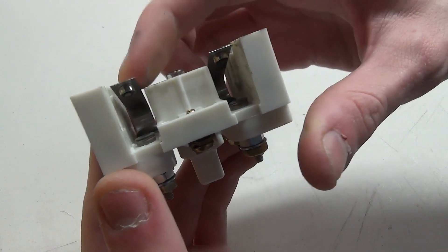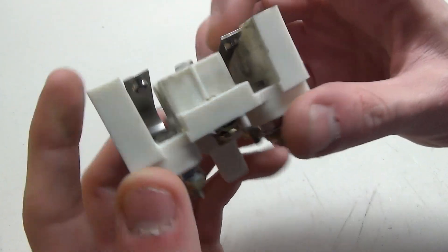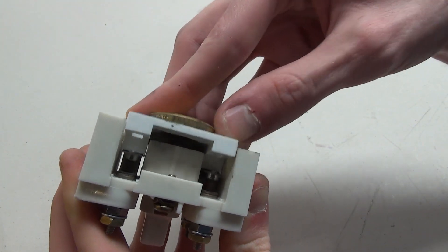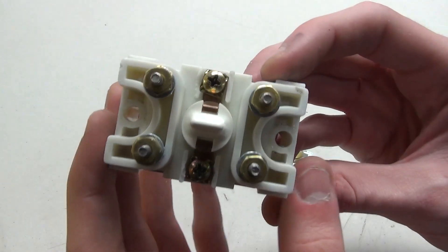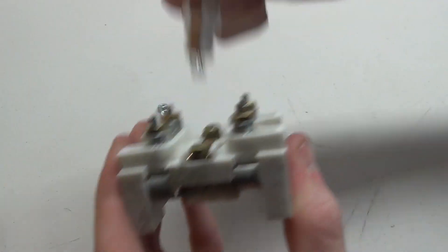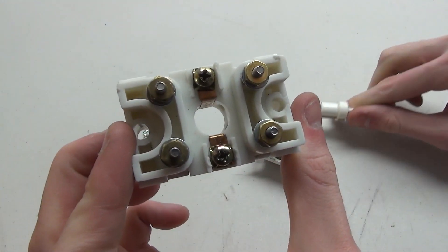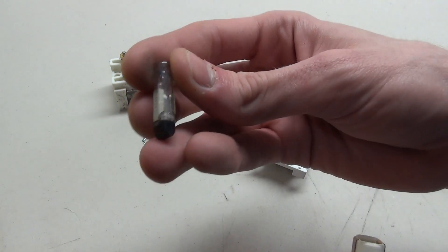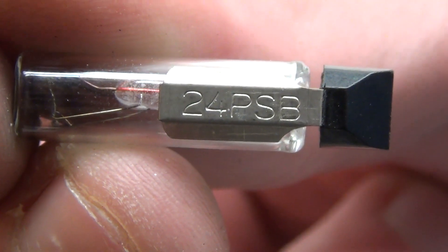You'll notice here there are two separate contacts, so there's two independent switches on each base, and the button simply presses those down and completes the circuit. As for the lamp, there is this small handle on the back, and pulling on that reveals the little lamp which is held in the little plastic container. Pulling the bulb out and looking at it, you can see this is a PSB type bulb.